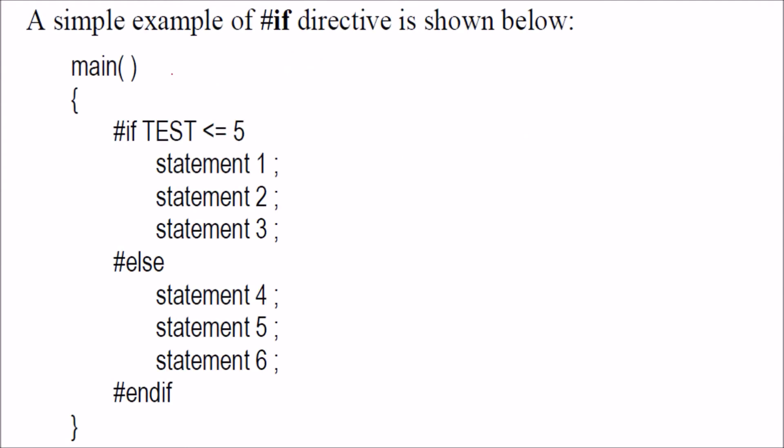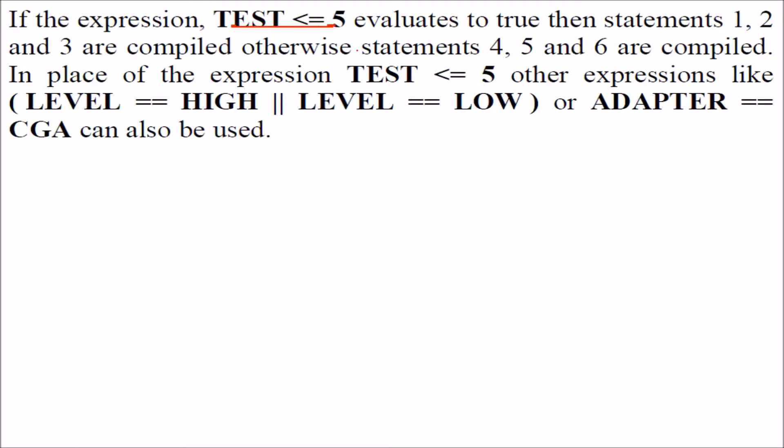I will give you an example. If this is an expression, if test less than equal to 5, if it is less than equal to 5, then these three lines will be done. Otherwise these four lines will be done and you end it. So this is a conditional if you are using. This is checking for the condition now.